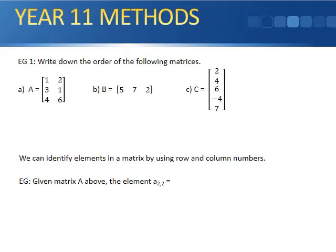Example 1, the order of the following matrices. A, one, two, three rows and two columns. Now this one is three by two. B, one row and one, two, three columns. So this one has an order of one by three. And this one has one, two, three, four, five rows and one column. So this one is five by one.